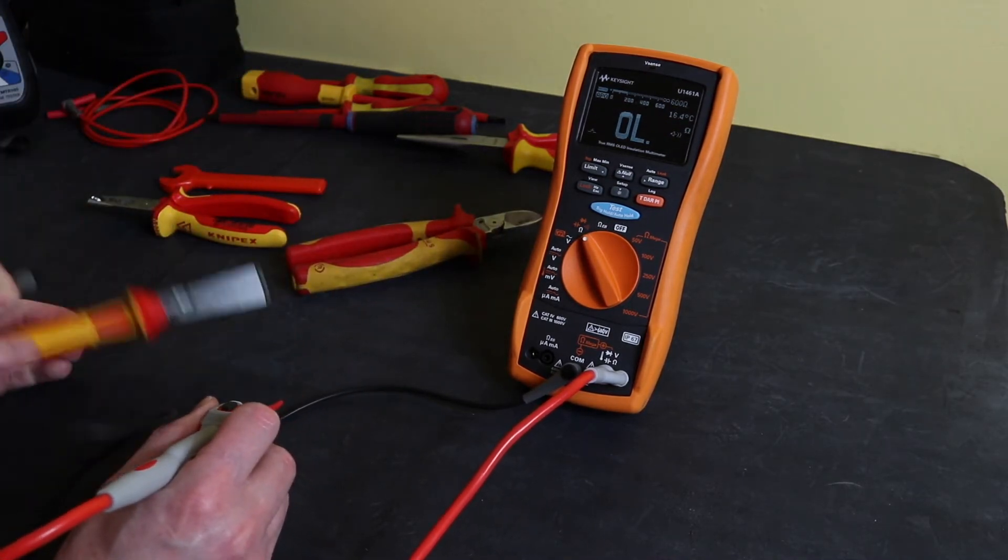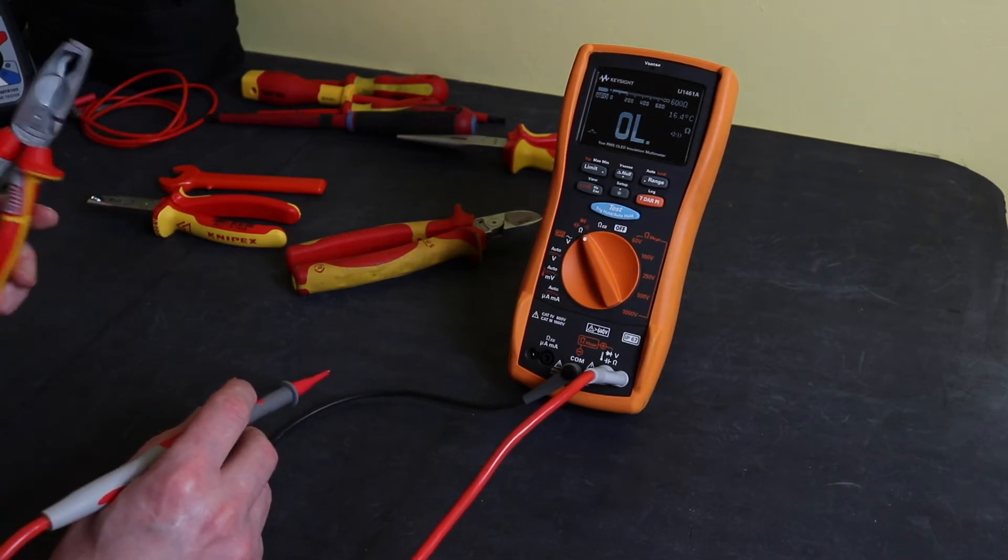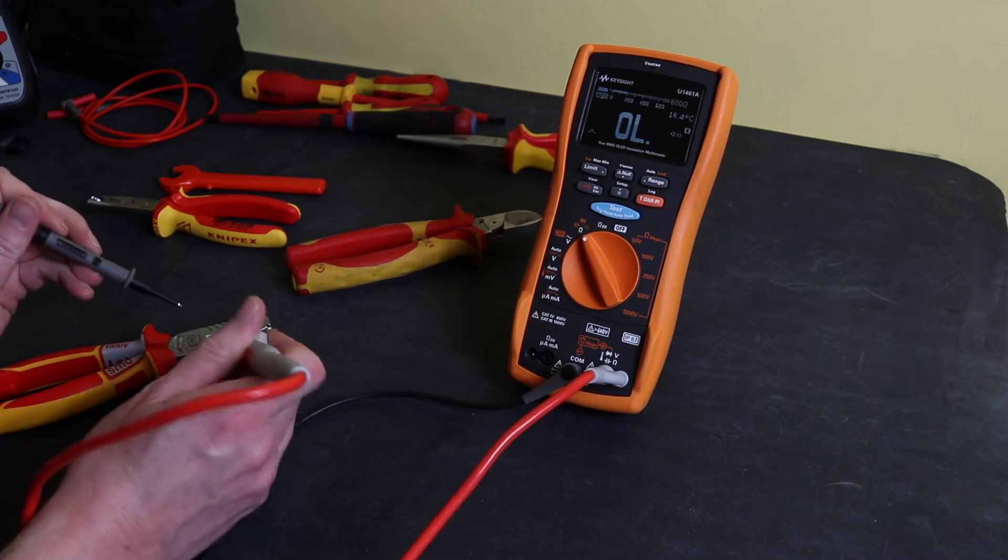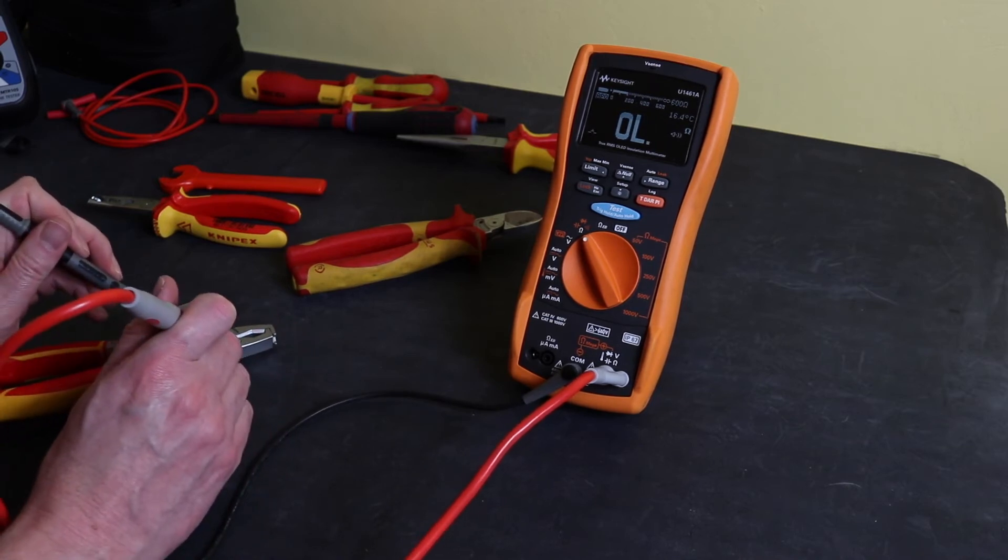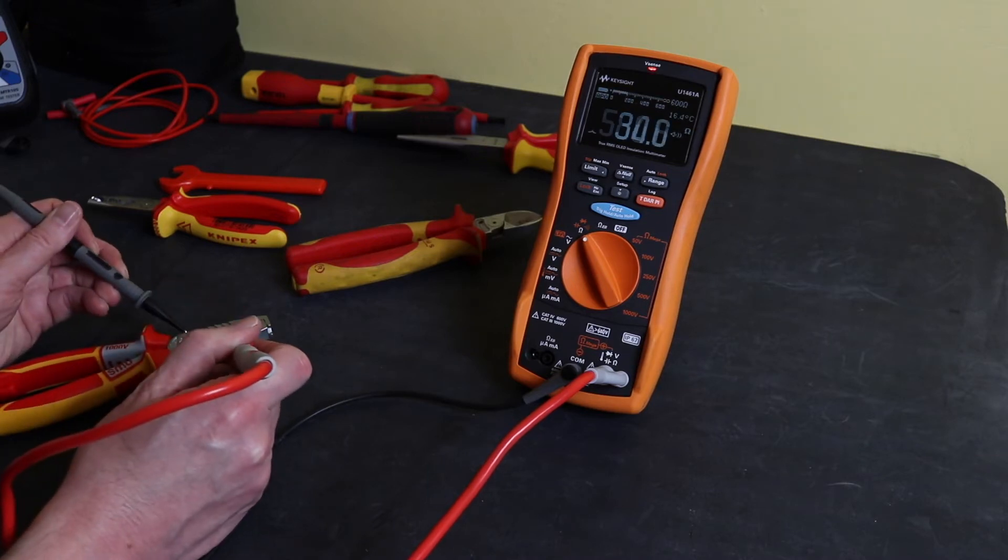These are pretty much brand new. These are the NWS stripping pliers that I've been playing with to see how I get along with them. I'll test them as well. Yeah, we've got continuity across there, haven't we?